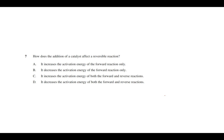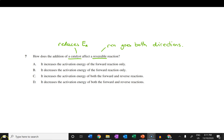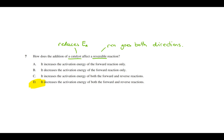Question 7: how does the addition of a catalyst affect a reversible reaction? The catalyst reduces the activation energy. The key word is 'reversible', meaning the reaction goes in both directions. That knocks out options A and B quickly because they only address one direction. Options C and D — since the catalyst reduces the activation energy in both the forward and reverse directions, the answer is D.